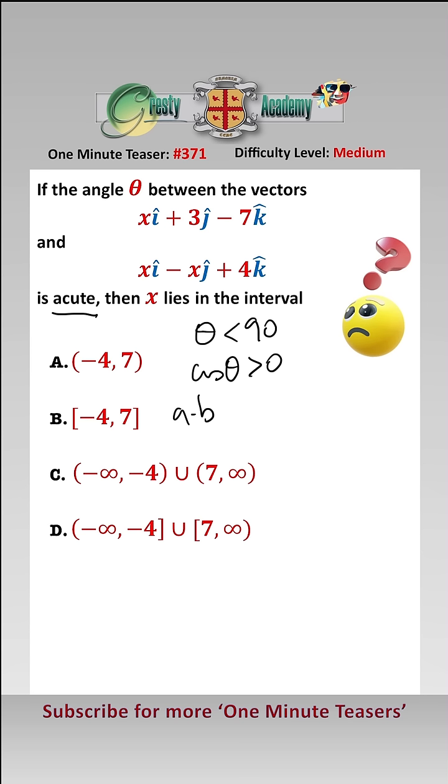So we're going to use the dot product A dot B equals mod A mod B cos theta, i.e. cos theta is equal to A dot B over mod A mod B. Now, the bottom bit is always positive, so therefore we just need the dot product A dot B to be greater than 0.